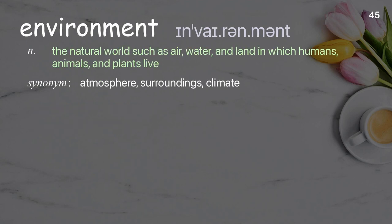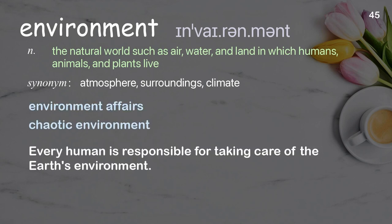Environment: The natural world such as air, water, and land in which humans, animals, and plants live. Examples: Environment affairs. Chaotic environment. Every human is responsible for taking care of the Earth's environment.